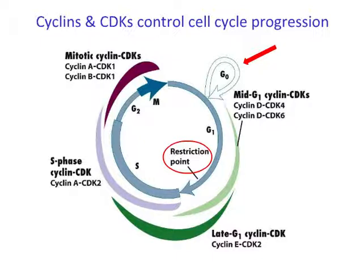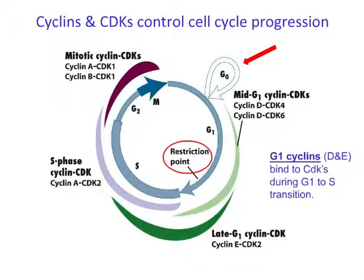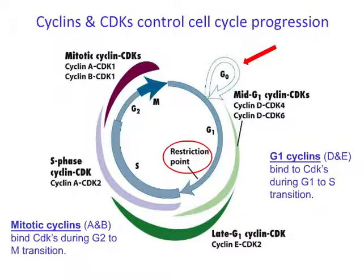There are two classes of cyclins. The G1 cyclins that bind to CDKs during the G1 to S transition are cyclins D and E. The mitotic cyclins, cyclins A and B, bind to CDKs during the G2 to M transition. The activity of cyclin–cyclin-dependent kinase complexes can be further inhibited by cyclin-dependent kinase inhibitor proteins, or CKIs.